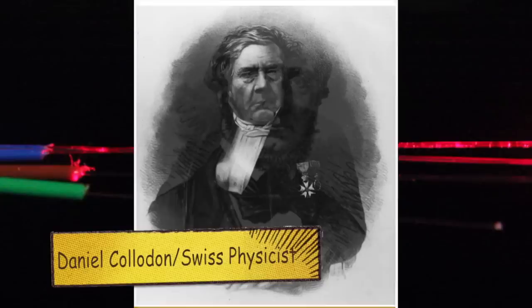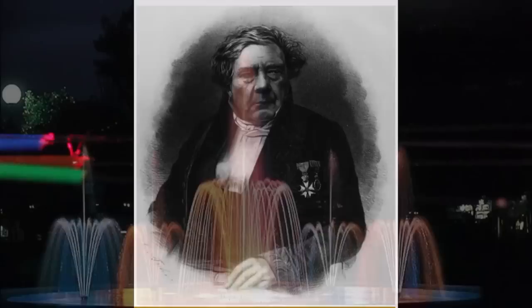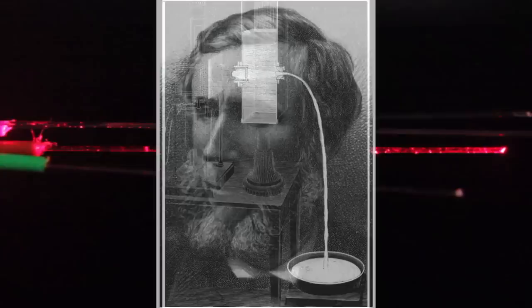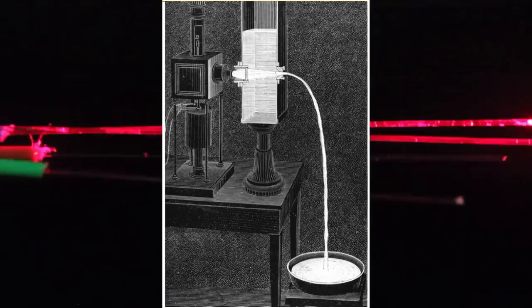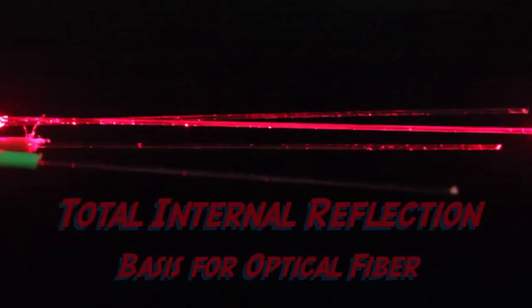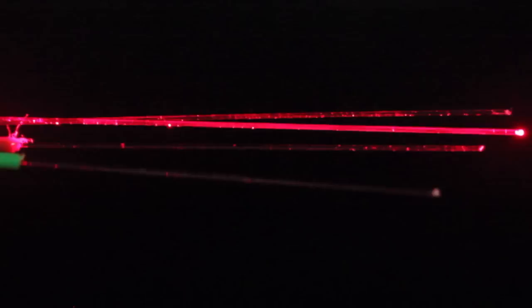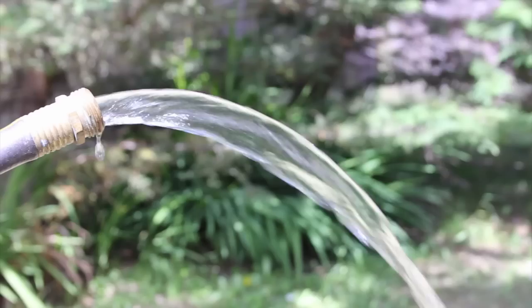Back in the 1840s, Swiss physicist Daniel Collodon and French physicist Jacques Babinet showed that light would follow the curves made by jets of water for fountain displays. Later, in 1854, John Tyndall popularized light guiding through demonstrations showing that light would follow the curves of a jet of water flowing from a tank. Both of these examples worked on the principle of total internal reflection, whereby the light traveling down a medium, such as a jet of water, is reflected back into itself at the border between the water and the air surrounding it.